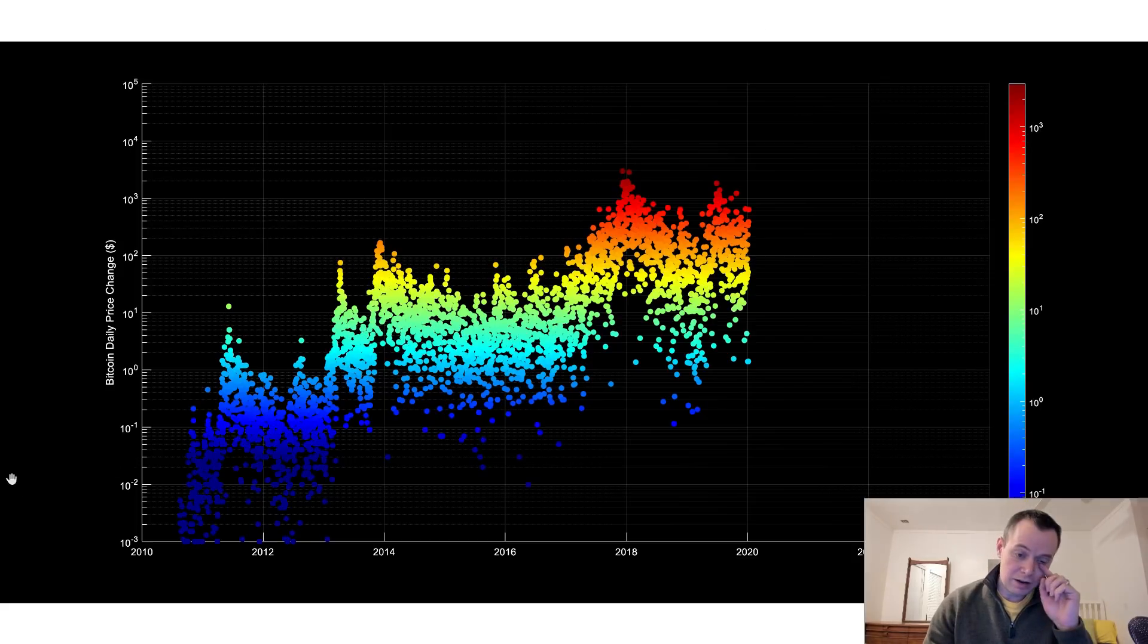So here, this is the graph I showed yesterday. And all it is, is the daily price change of Bitcoin as a function of time. And this color code here is not a third dimension or anything.